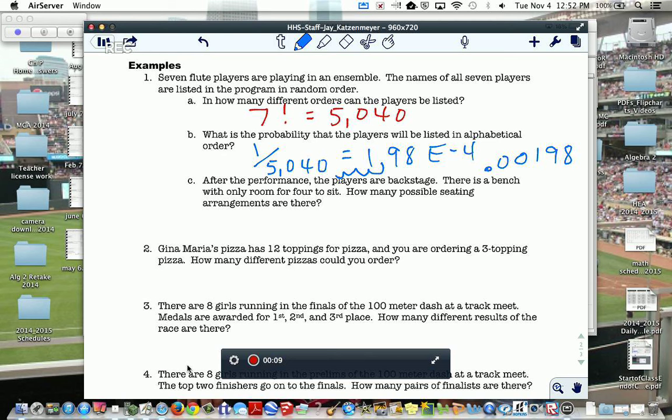After the performance, the players are backstage. There's a bench with only room for four to sit. How many possible seating arrangements are there? On an example like this, I might just do my four blanks where the kids can sit, and there'd be seven people could sit there, six people, five people, or at the very end there's four. So, just multiplying those together, we get 840 different combinations.